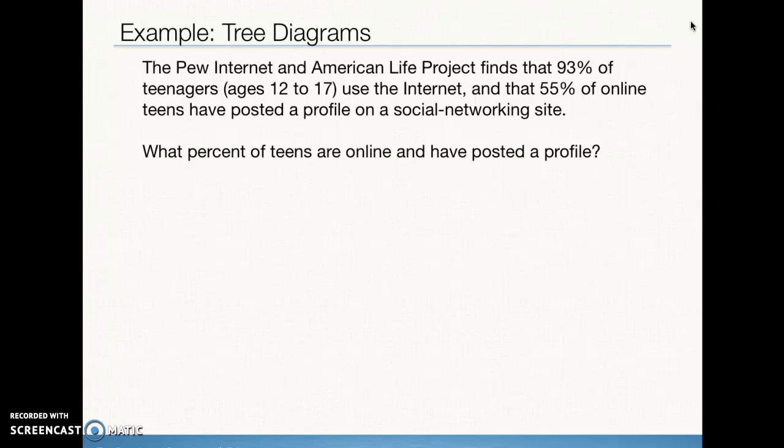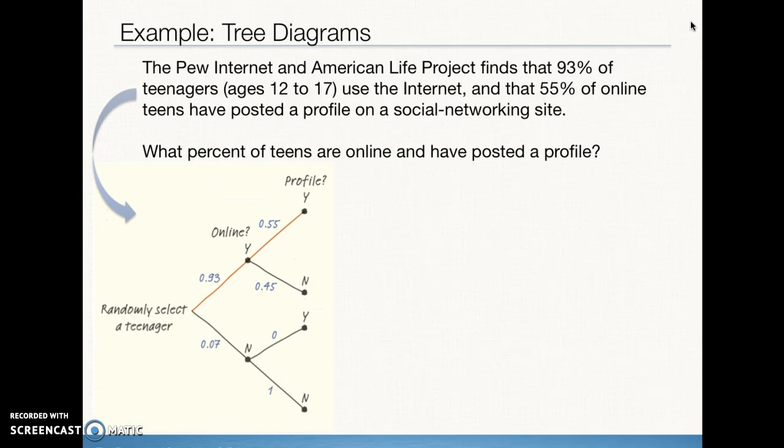Here we have a slightly more relatable example. The Pew Internet and American Life Project finds that 93% of teenagers ages 12 to 17 use the Internet. Now what that doesn't say but does say, the subtext, is that 7% don't use the Internet. And 55% of online teens, that means 55% of the 93%, have posted a profile on a social networking page. So the question is, what percent of teens are online and have posted a profile? So this is a perfect application for a tree diagram.